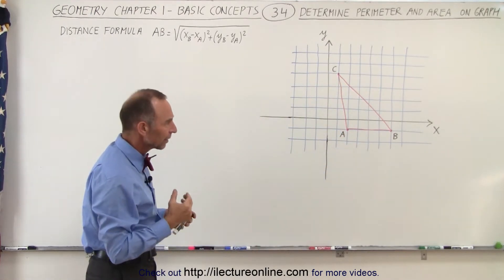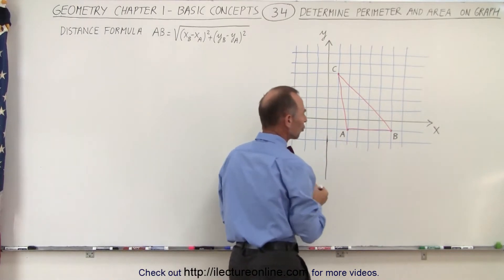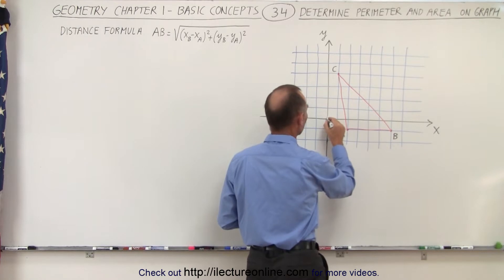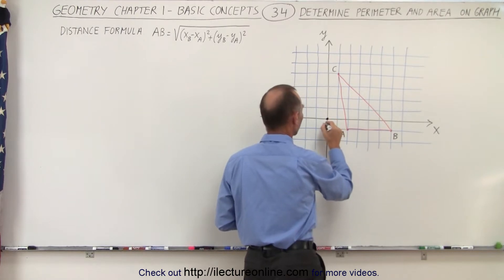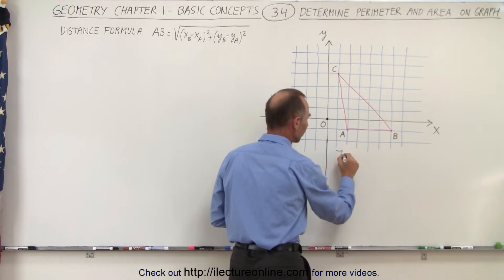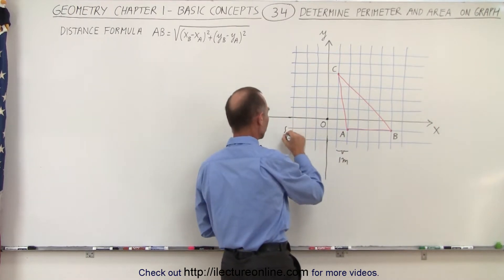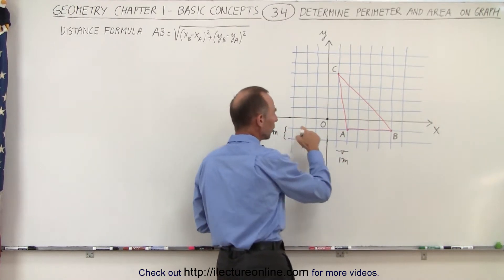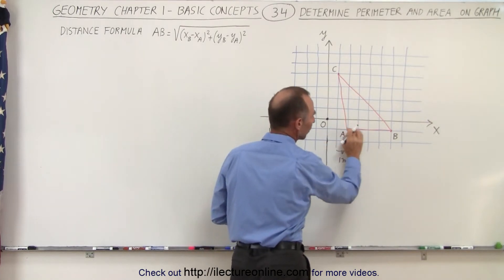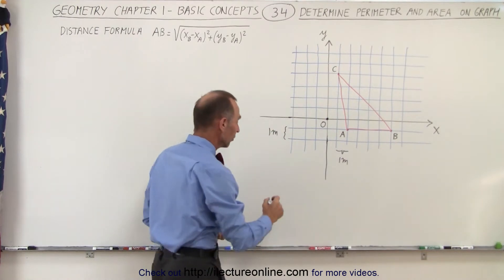To find the area, we can make that a little bit easier. If we assume that each one of the squares is 1 meter — with the origin here — we can clearly figure out what the length of the base is and what the height is of the triangle.